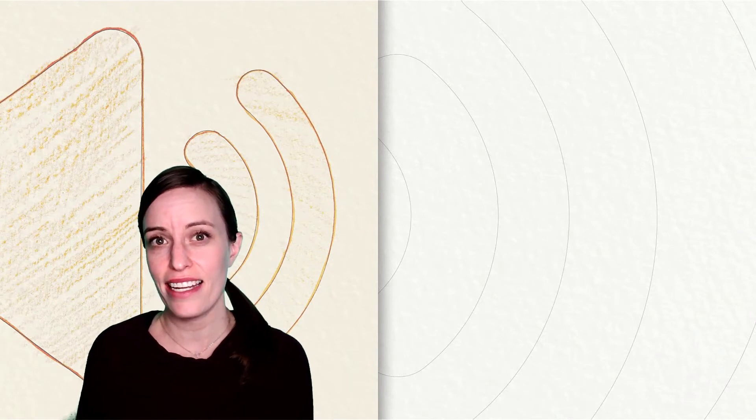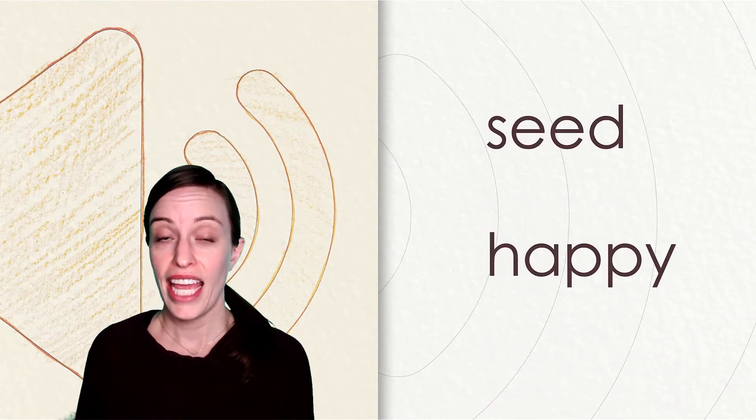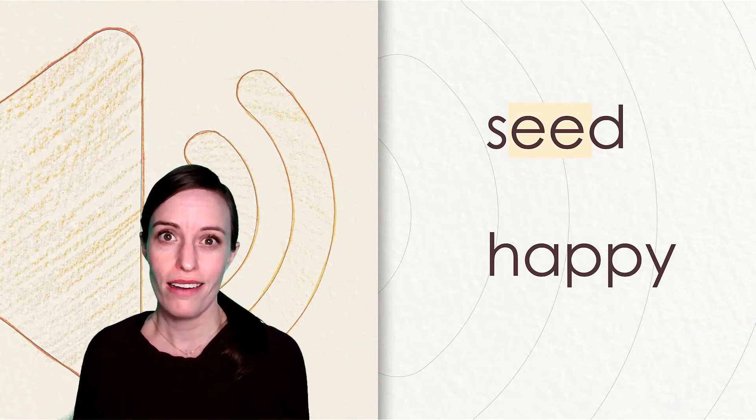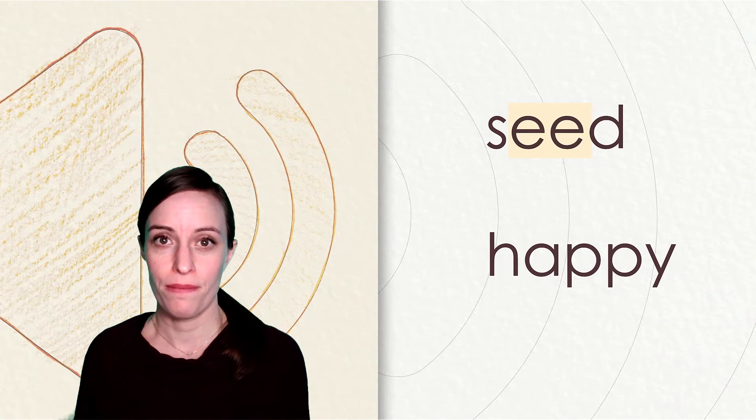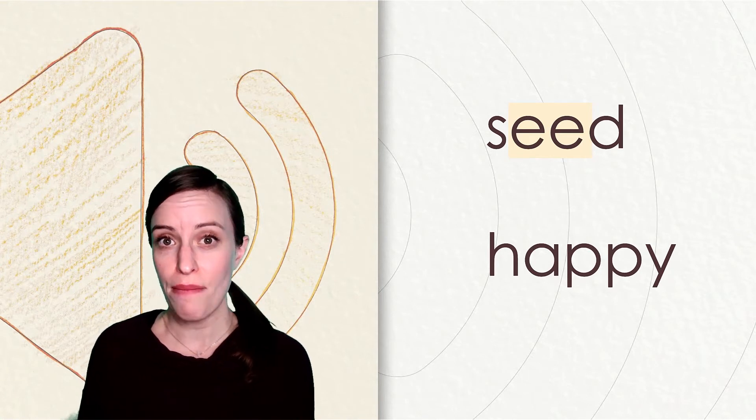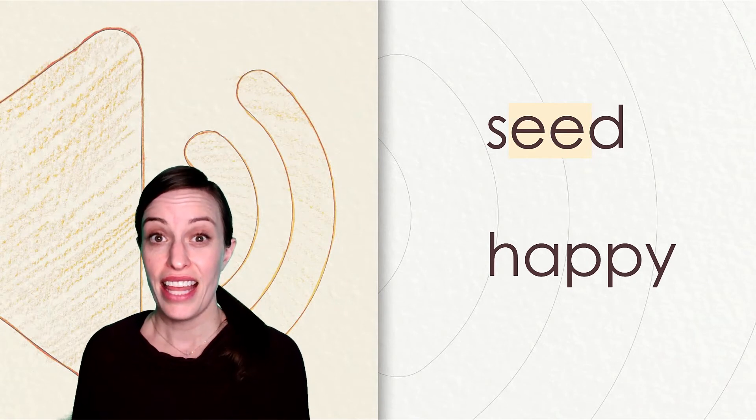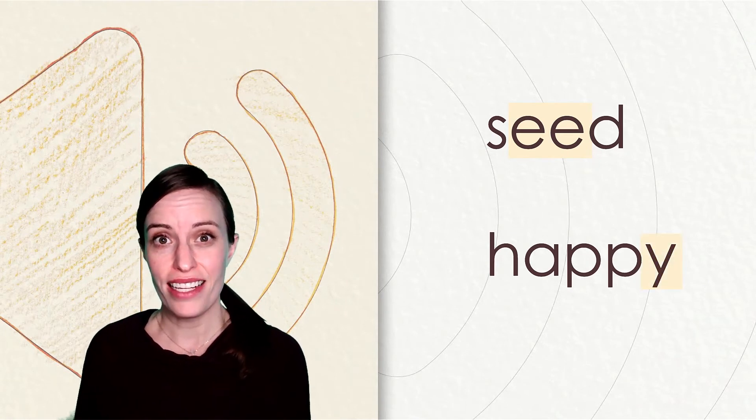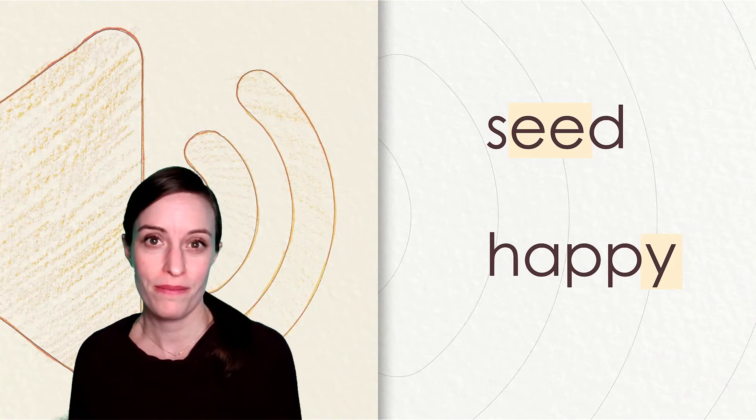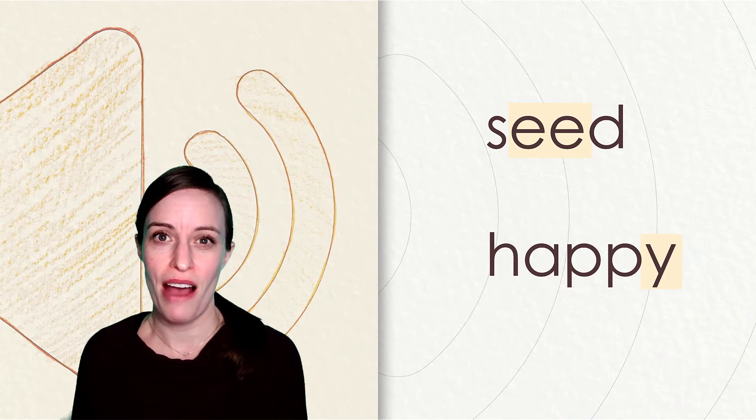Let's listen to one more set of words. Seed and happy. What long vowel sound do you hear in seed and happy? Did you say the ee sound? That's it! In the word seed, we have the vowel team ee in the middle of the word. Those ees work together to say ee. The long ee sound in happy comes at the end of the word. That y says ee because it is at the end of a word with more than one syllable. Nice work listening for those long vowel sounds.